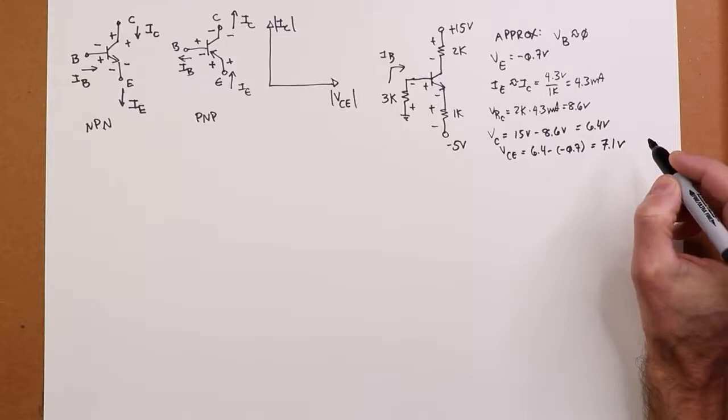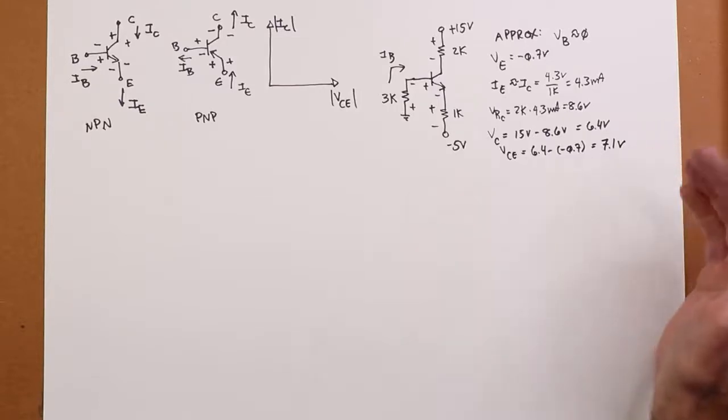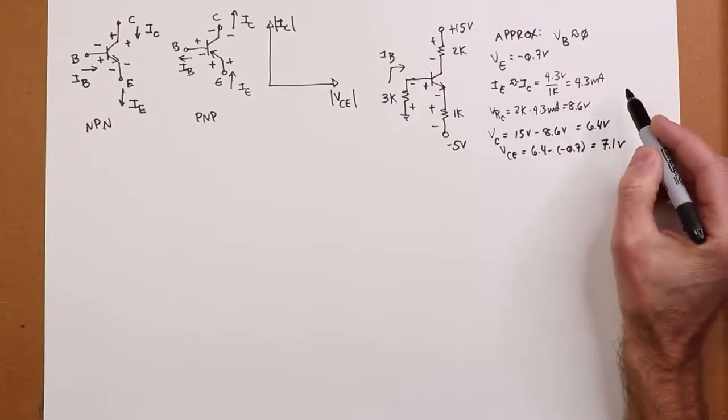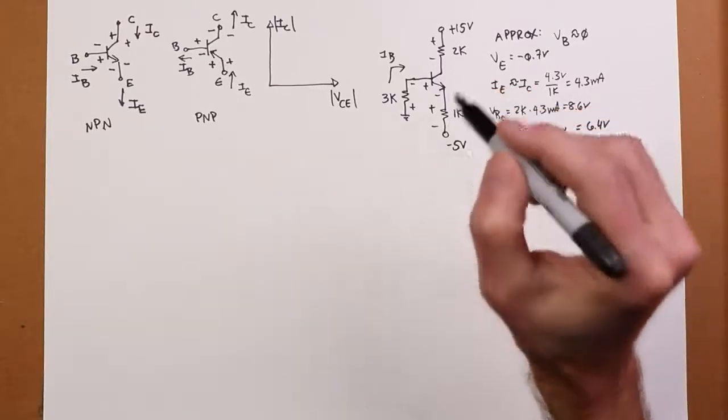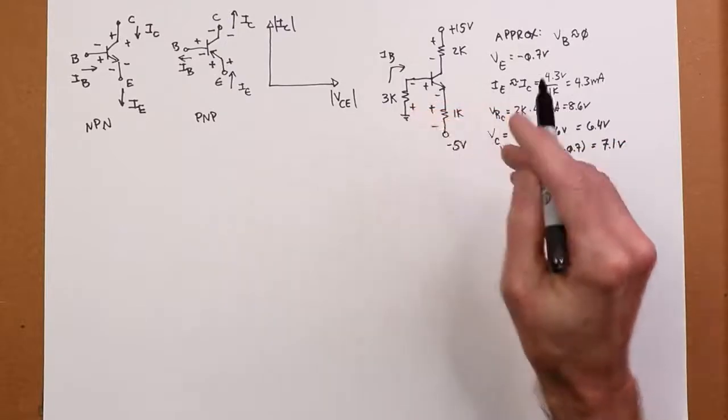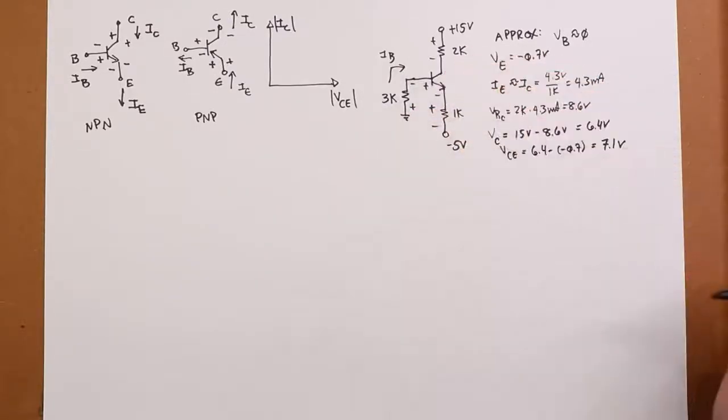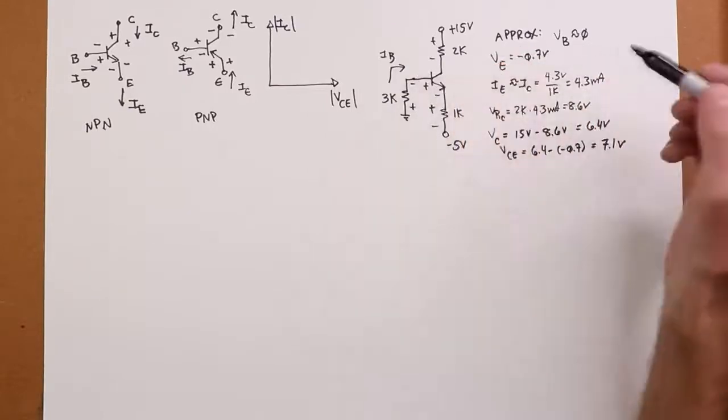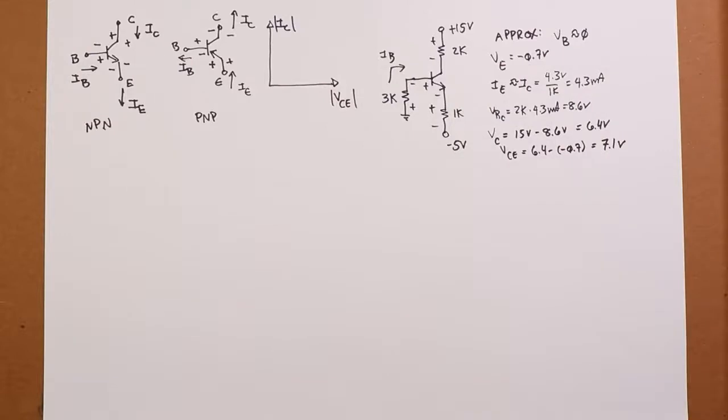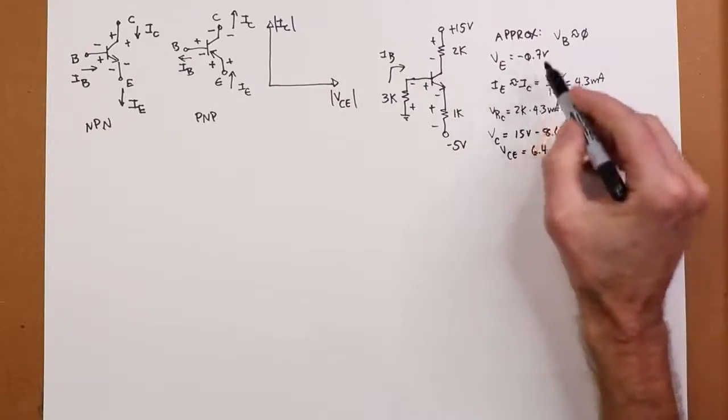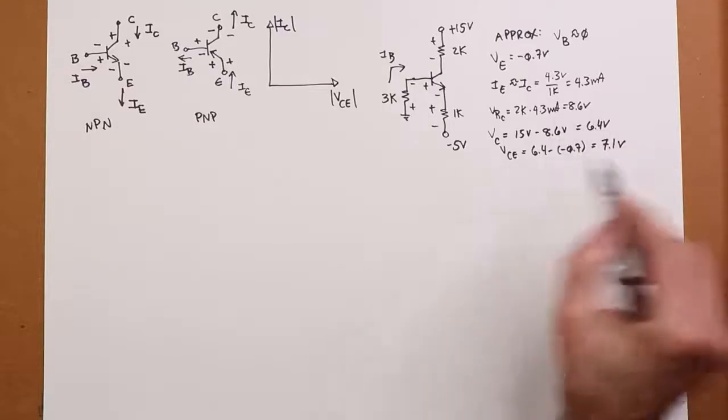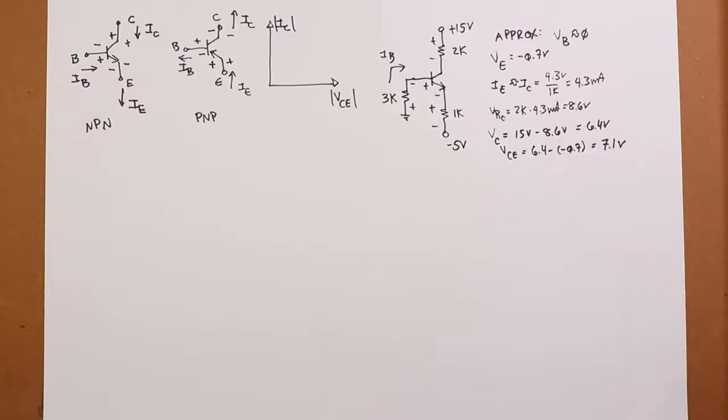Now, if you use the typical beta, let's say 100, you could divide this out. 4.3 mils divided by 100 would get you 43 mics. Take 43 microamps, you multiply it by 3k, and you'll discover that your RB drop here is about 130 millivolts. So it's not zero. Vb is not zero. It's about minus 0.13 volts. So your Ve is really closer to minus 0.84 or 0.83, something like that. So that's the NPN version. So nothing new there.